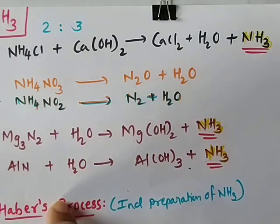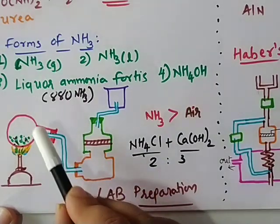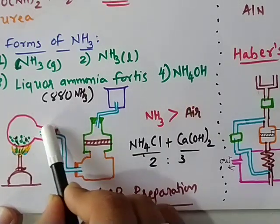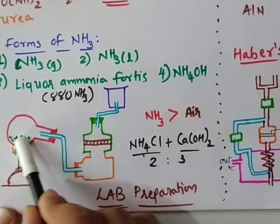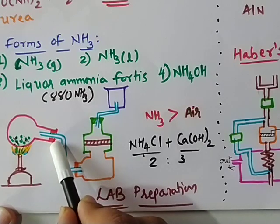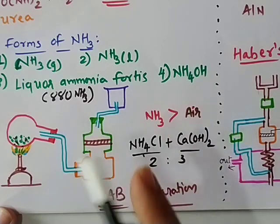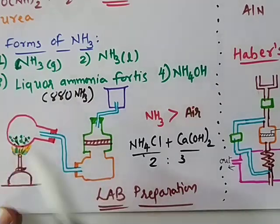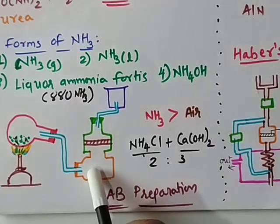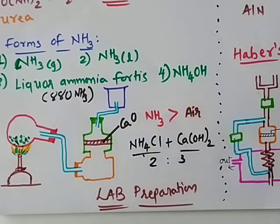The ammonia formed is passed through the delivery tube into another chamber. Any water produced remains in the tilted area of the round-bottom flask — the flask is kept tilted so water does not trickle back into the heated flask, which would cause it to break. The collected ammonia gas is moist, so we dry it using calcium oxide (CaO), also called quicklime, as the drying agent.